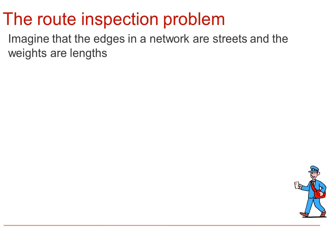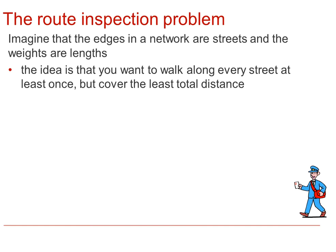Let's look at the route inspection problem. So imagine that the edges in a network, in other words a weighted graph, are streets and the weights are lengths. The idea is that you want to walk along every street at least once but cover the least total distance.